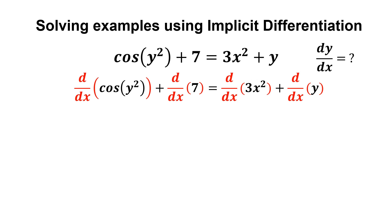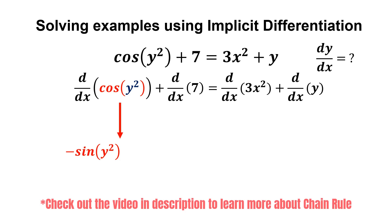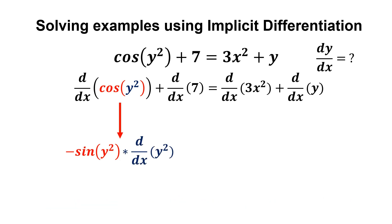Taking the derivative on each term, and we start by differentiating the first term. Notice that we have cosine of y², which is a composite function, so we apply the chain rule. Differentiate the whole thing, we get negative sine y², and we multiply it by the derivative of the term inside the brackets.